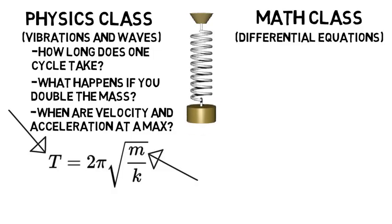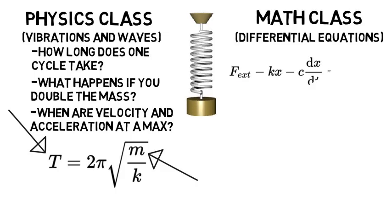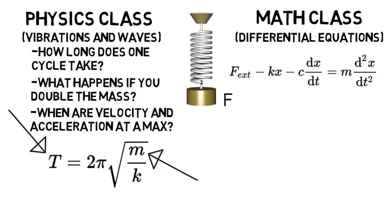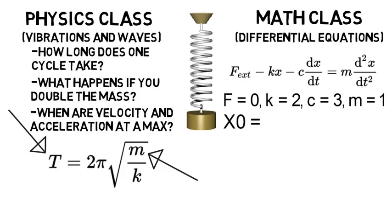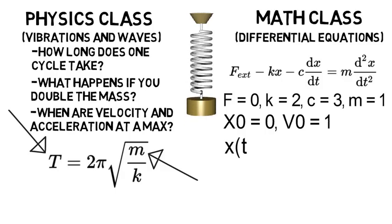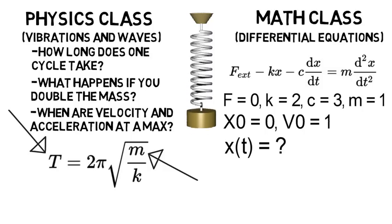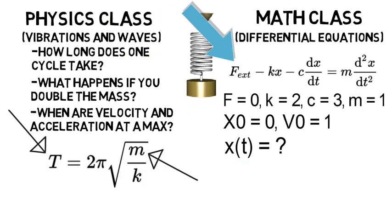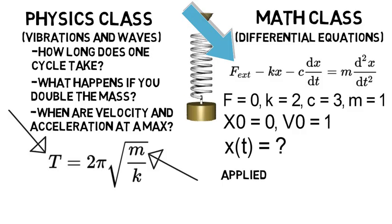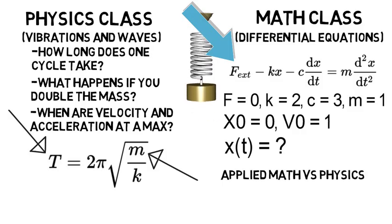In the math class, it would be, here's the equation that represents the system, and here are the constants and initial position and velocity, now solve it for position over time. It's just solving the equations that represent the system, but you really don't know much behind the physics, like what its energy is, or where the equation even came from. You probably won't even have to deal with units. You just know the math. So this kind of shows some of the differences between an applied math concept and actually applying it in the physics class.